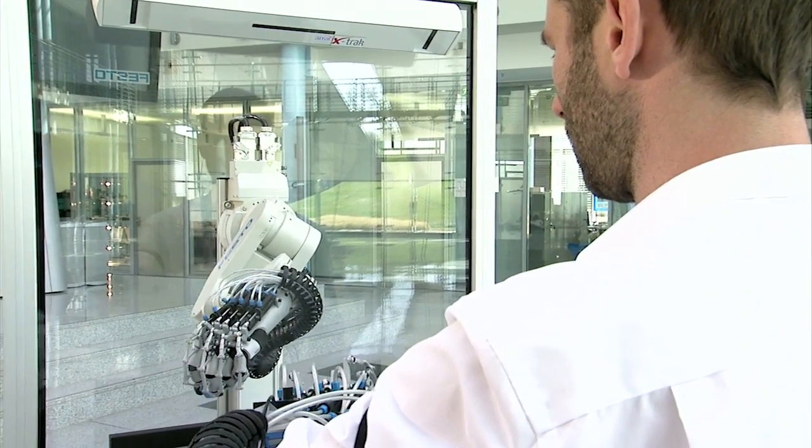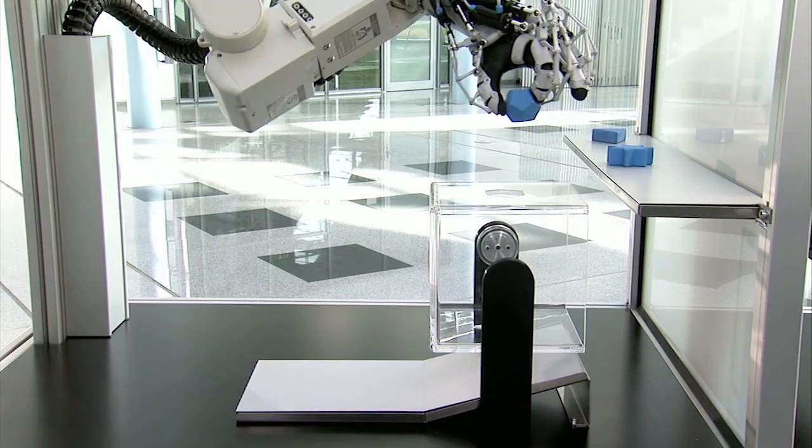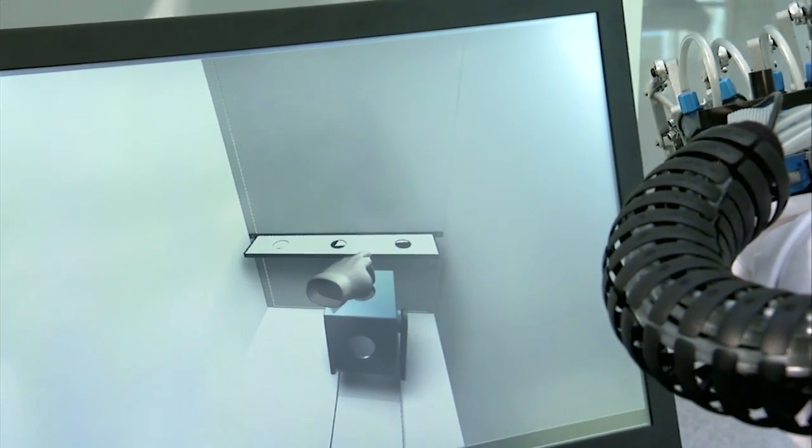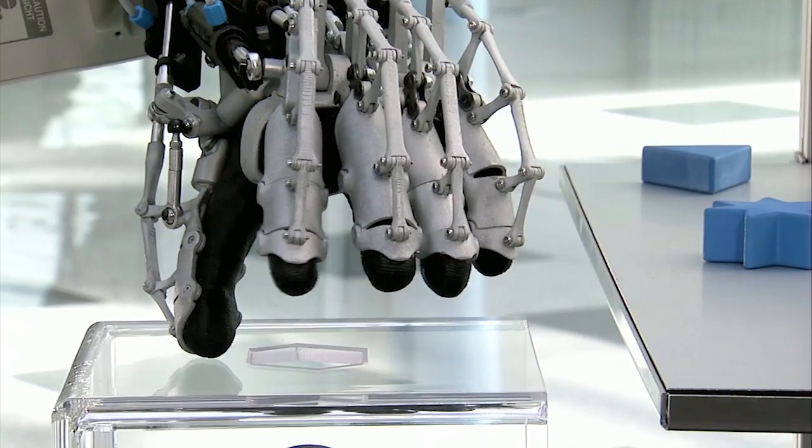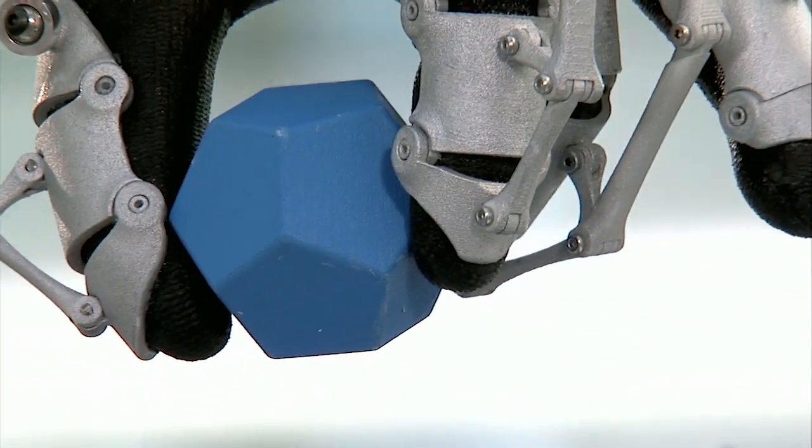The ExoHand is suitable for the remote manipulation of a robotic hand in dangerous or hazardous environments. As it can be fitted over either a human hand or an artificial hand of silicone, the movements of the ExoHand worn by a human operator can be transferred to a silicone model fitted with a second ExoHand.